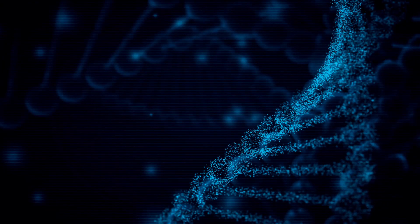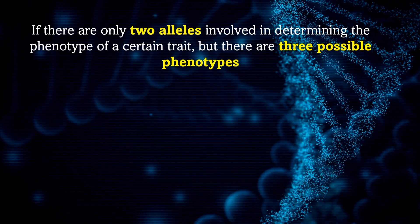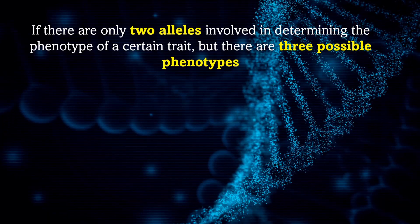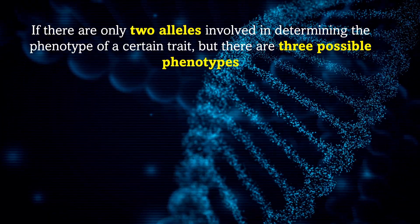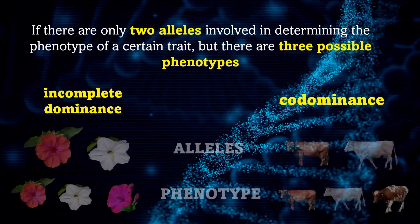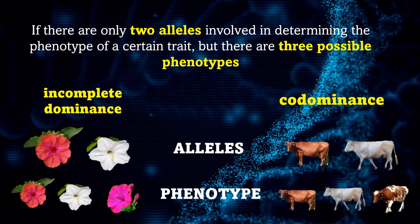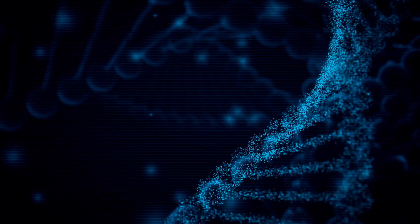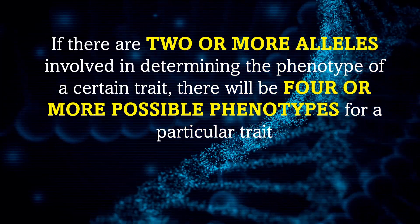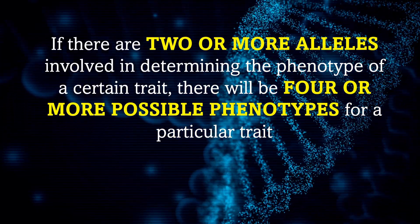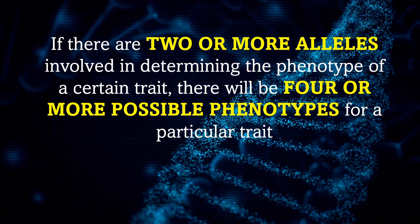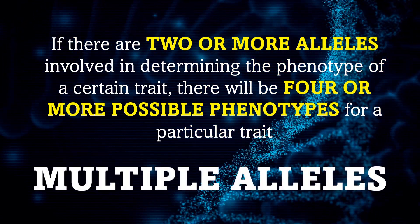If there are only two alleles involved in determining the phenotype of a certain trait but there are three possible phenotypes, then the inheritance of that trait illustrates either incomplete dominance or co-dominance. But if there are four or more possible phenotypes for a particular trait, then more than two alleles for that trait must exist in the population. We call this multiple alleles.